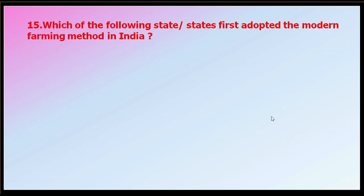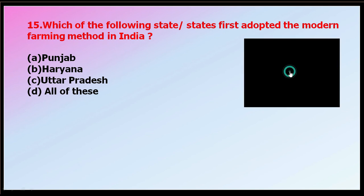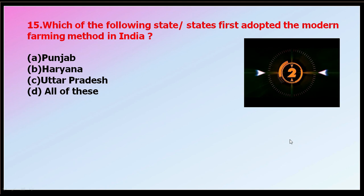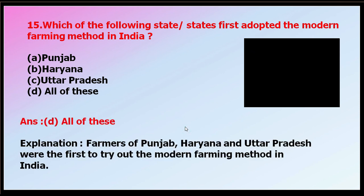Question number fifteen: which states first adopted modern farming methods in India? Options: Punjab, Haryana, Uttar Pradesh, or all of these. The correct answer is all of these. Farmers of Punjab, Haryana, and Uttar Pradesh were the first to try out modern farming methods in India during the green revolution in the 1960s.